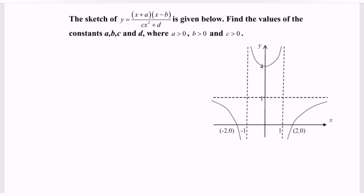Find the value of constants a, b, c, and d, where we have the restriction that a, b, and c must be greater than zero.